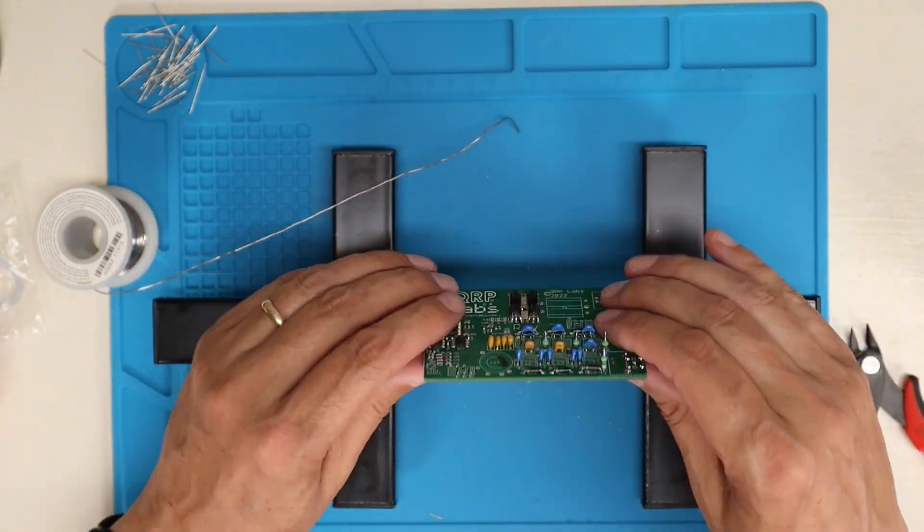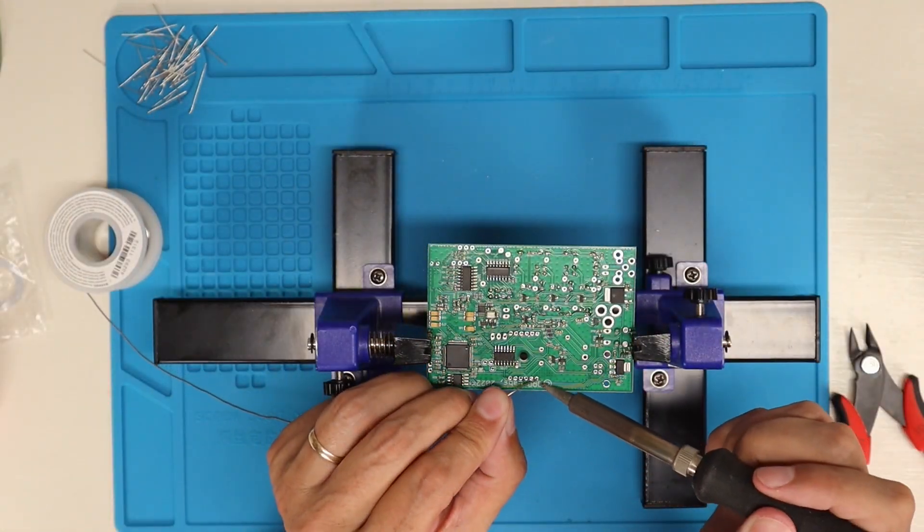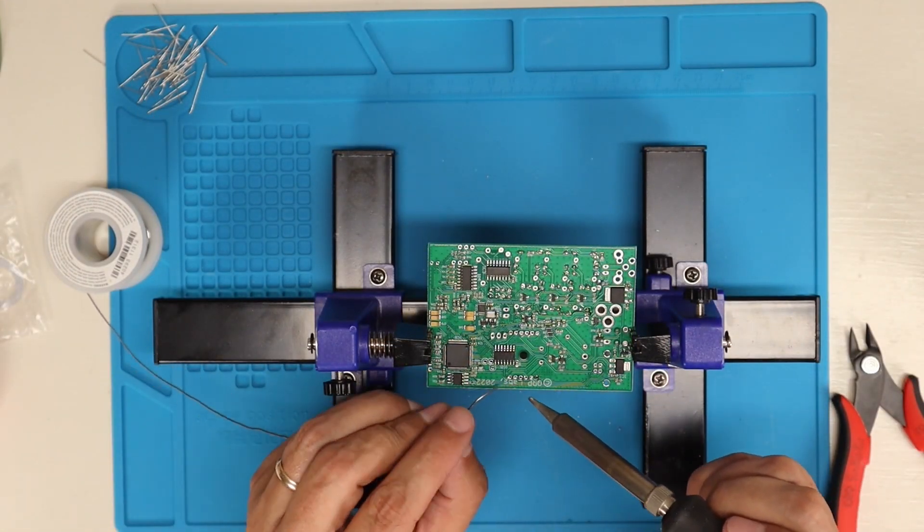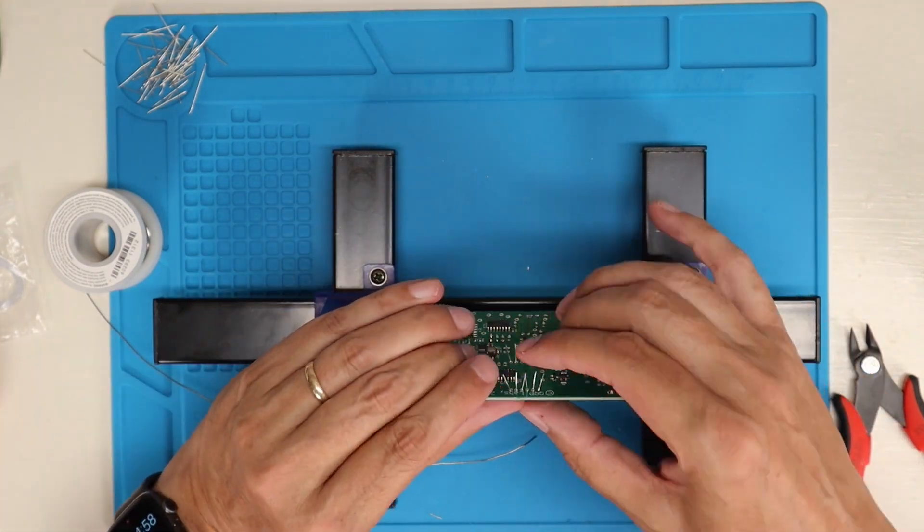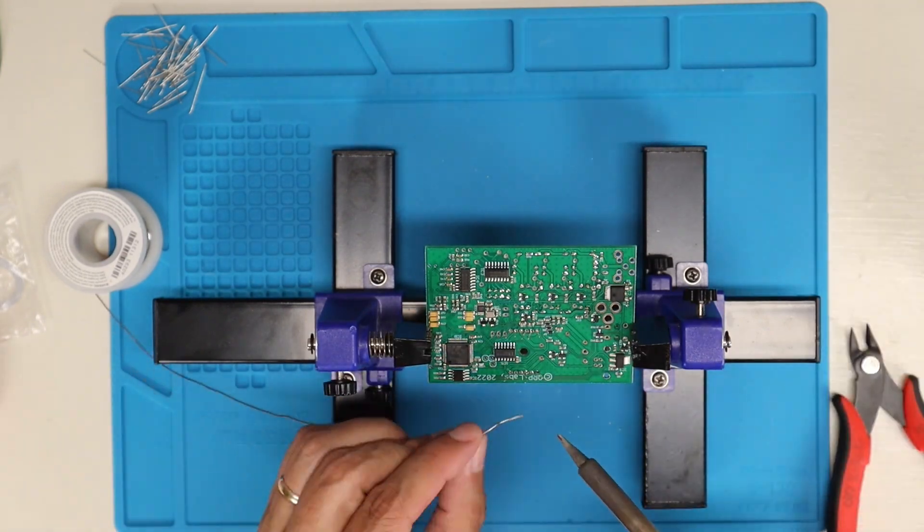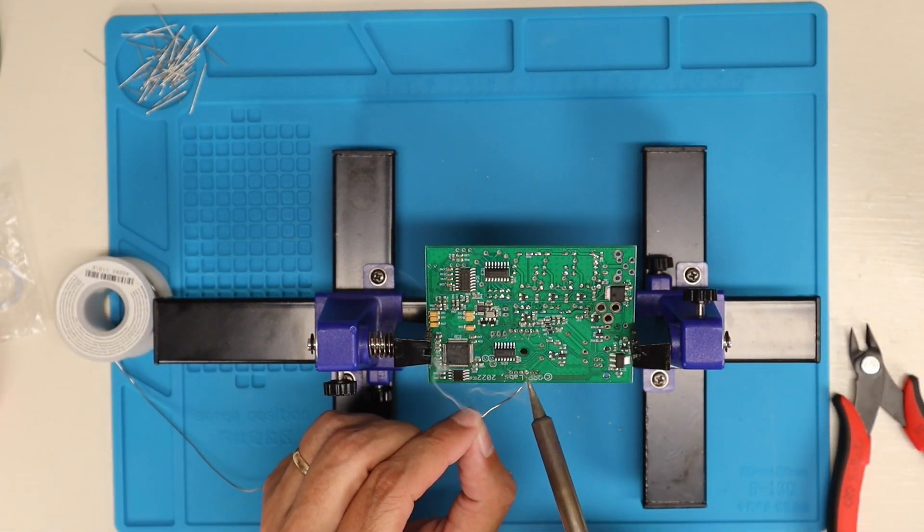Once you get all the transistors placed, then we can go ahead and solder these. What I do is I solder just one leg first, and then I make sure that the package is sitting flush to the PCB. If it's not, while that one's soldered, you can kind of bend it so that it'll sit right.